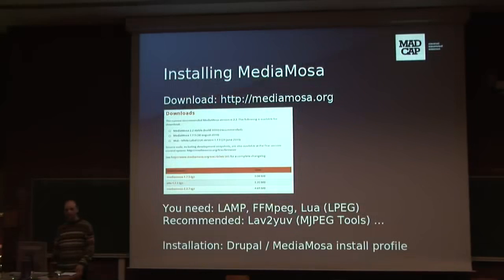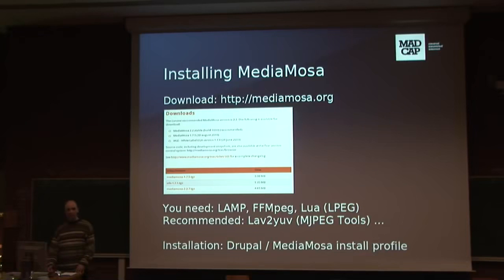How can you download it? We have a website — MediaMosa.org — where we have different MediaMosa versions. I suggest using the latest one because version 1.7 won't be supported anymore, and you can download the video frontend too. You need LAMP — Linux, Apache, MySQL, PHP — but you can also use FreeBSD or OpenBSD instead of Linux, and MariaDB works fine with this installation. You need FFmpeg for transcoding videos, creating still images, and checking the videos. And you need Lua, which is a scripting language.